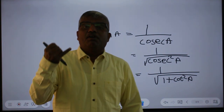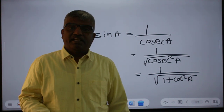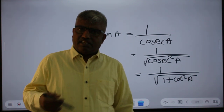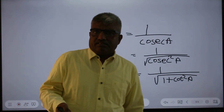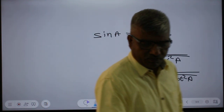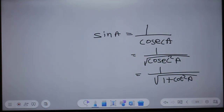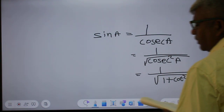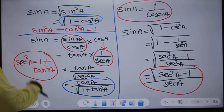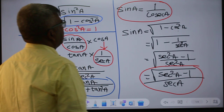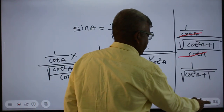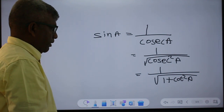You have to know all these six formulas. Sin A equals square root of 1 minus cos squared A. Sin A equals tan A over the square root of 1 plus tan squared A. Sin A equals 1 over cosecant A. You should also know: cos A equals 1 over secant A, tan A equals 1 over cot A, cosecant A equals 1 over sin A, secant A equals 1 over cos A, cot A equals 1 over tan A, and tan A equals sin A over cos A, cot A equals cos A over sin A.